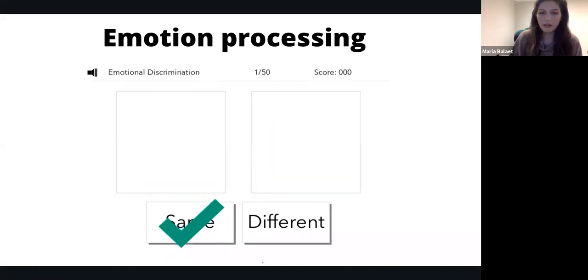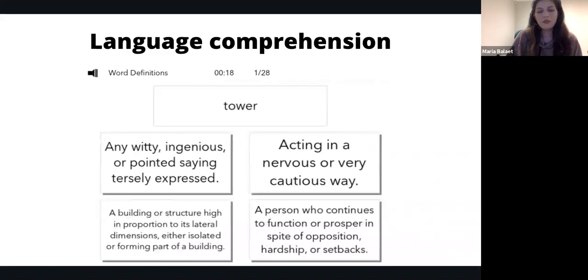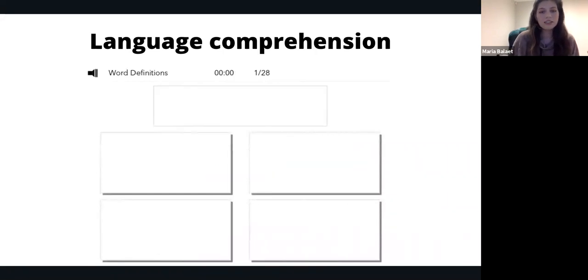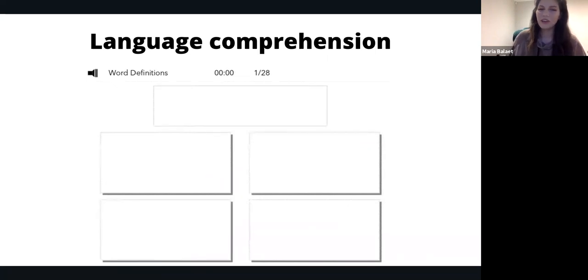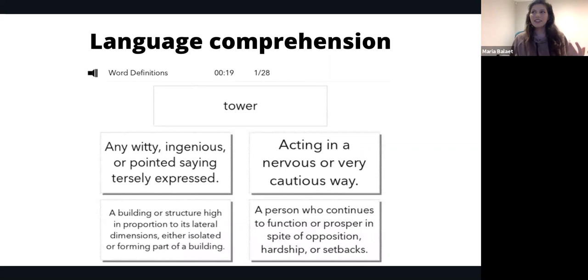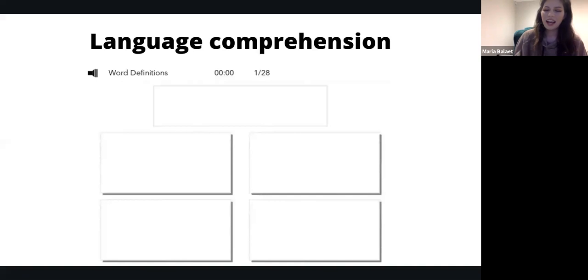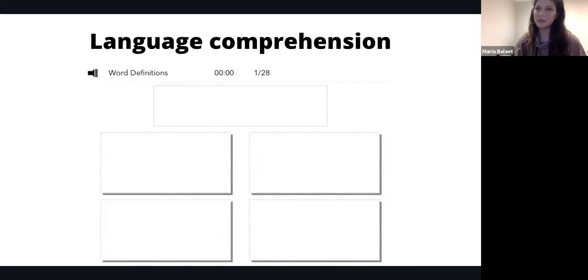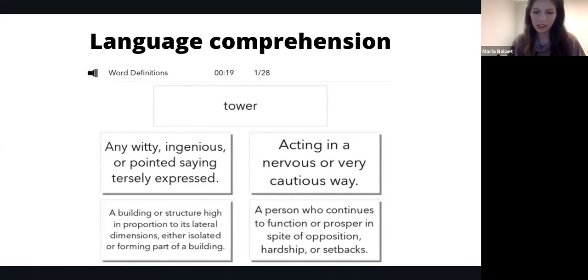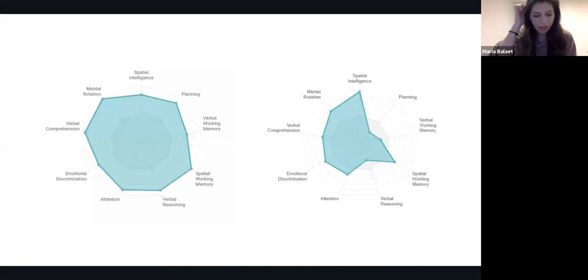Finally, we have language comprehension tasks such as this one where we are presented with a word on the top of the screen and then various possible definitions of that word, so the person has to pick which definition matches the word. Of course you would think tower is a very easy thing to define, but it would be surprising to know that even in the sober state this task is quite difficult for people and in the psychedelic state even more so. It would be interesting to see whether people still retain the same meaning for the same objects of day-to-day life.